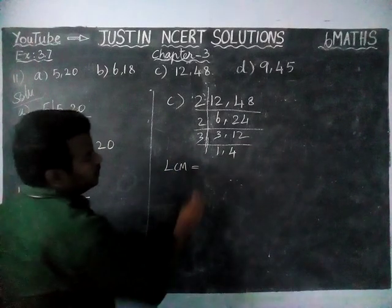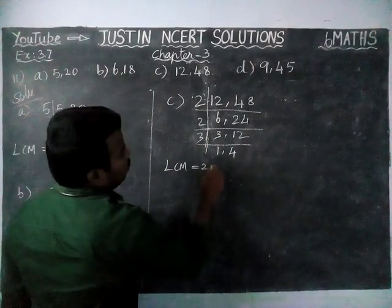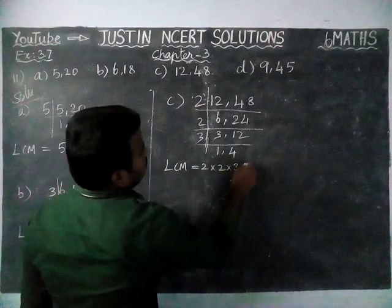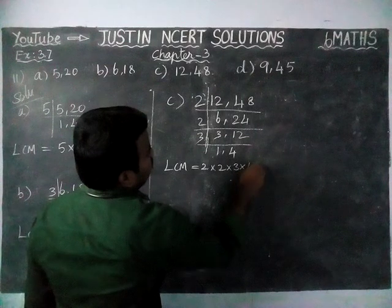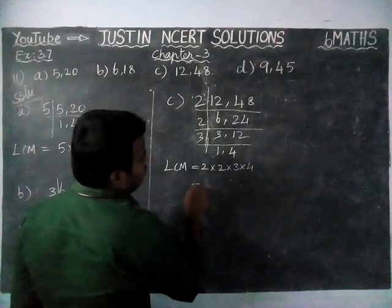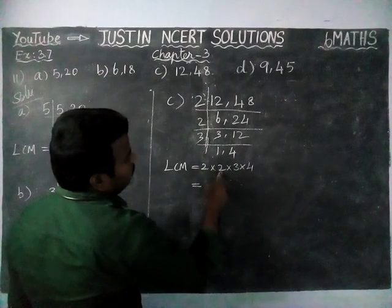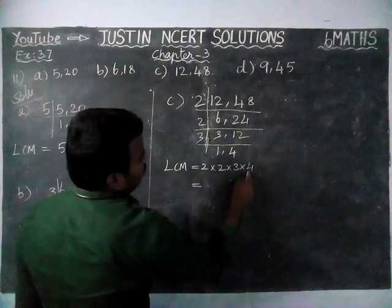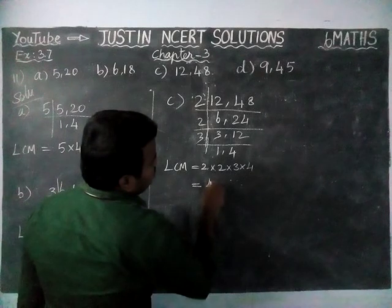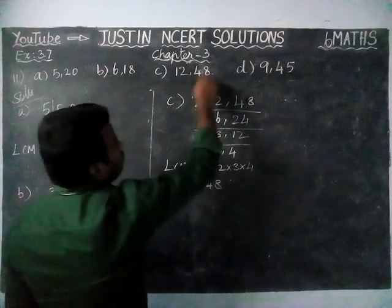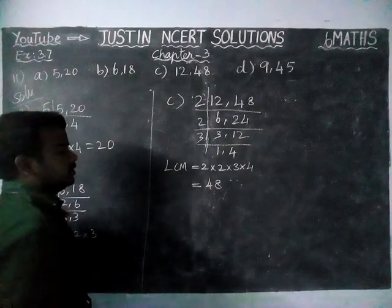LCM is equal to 2 into 2 into 3 into 4, is equal to 2, 2s are 4; 4, 3s are 12; 12, 4s are 48. We got that larger number.